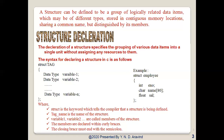Normally, the structure declaration appears at the beginning of the program file before any variables or functions are declared. They may also appear before the main program along with macro definitions such as #define. In such cases, the declaration is global and can be used by other functions as well. One more key point: the members are declared within the curly brackets and the closing braces must end with a semicolon.